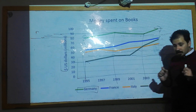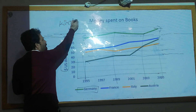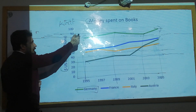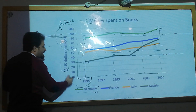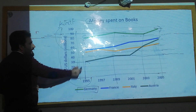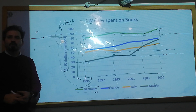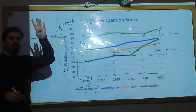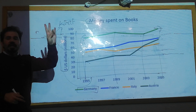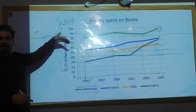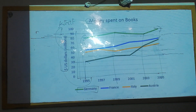In the explanation part, you must keep in mind four things: what is happening (amount of money spent on books), where it is happening (y-axis), when it is happening (x-axis), and how the increase or decrease is occurring. IELTS Task 1 consists of four paragraphs: introduction, overview, supporting paragraph one, and supporting paragraph two.